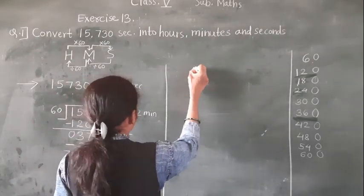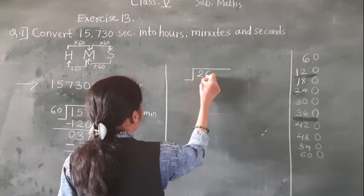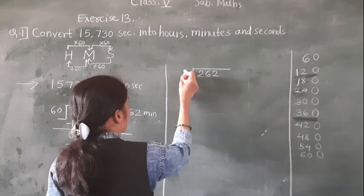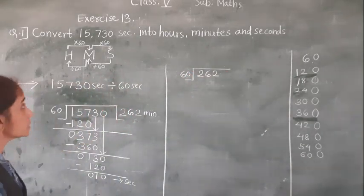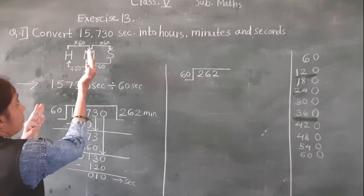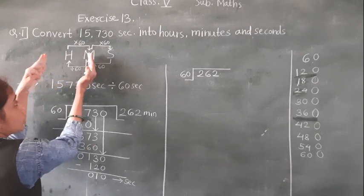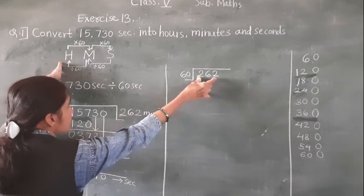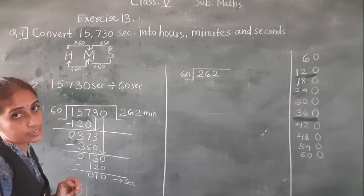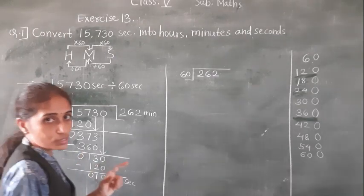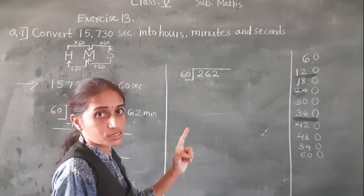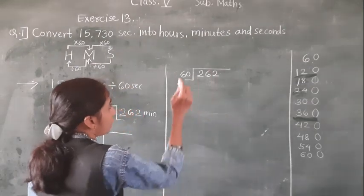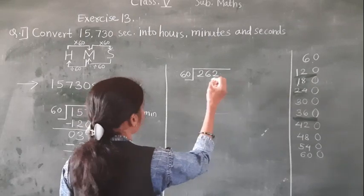Directly writing here: 262 minutes. For 262 minutes we will divide by 60 minutes. Minutes we are going to convert into hours. For these minutes we divide by 60 minutes because 60 minutes is equal to 1 hour.